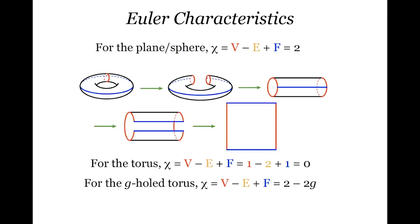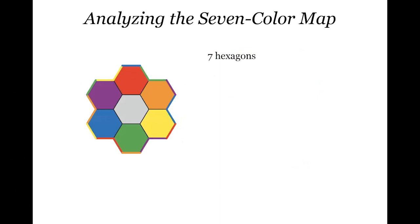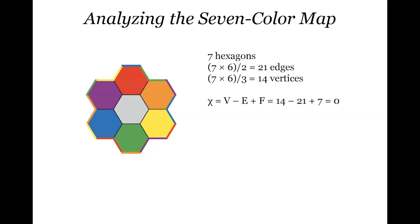Let's look at V minus E plus F for the crocheted hexagon object — seven hexagons crocheted together. The total number of edges in all the hexagons is 7 times 6 equals 42, but each edge is shared by two hexagons, so divide by two: 21 edges. There are three hexagons at each vertex, so total vertices is the number of vertices of each hexagon divided by 3, giving 14 vertices. V minus E plus F is 14 minus 21 plus 7, which equals zero — confirming what we saw: it's a torus.